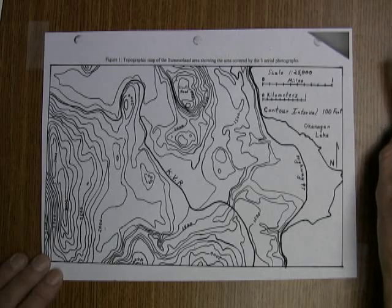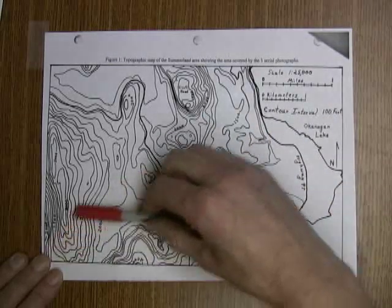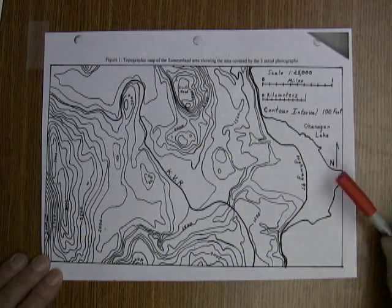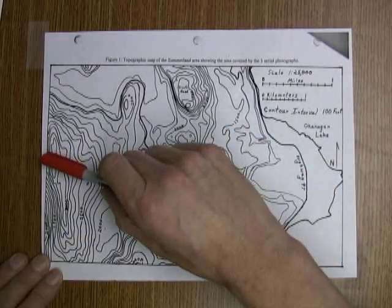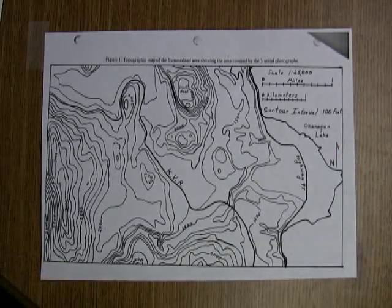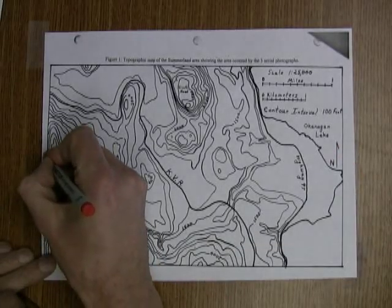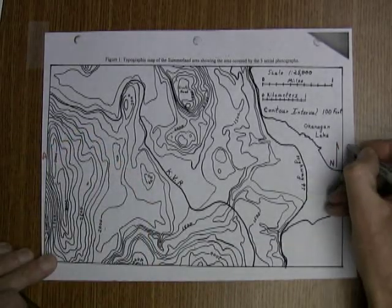Now what we're going to do is draw a topographic cross profile. Now we could draw a profile across anywhere on this map. In this particular case we're going to draw it from here to here and we'll label that as A and B.